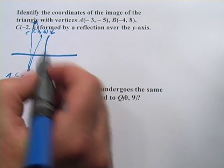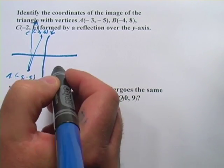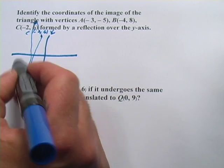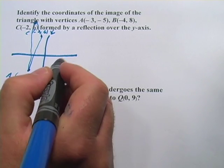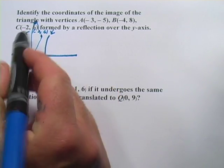Since we're reflecting it across this y-axis, everything is going to end up over here in these two quadrants. None of the x values are going to be negative anymore. They're going to be positive, the corresponding positive point.